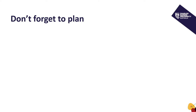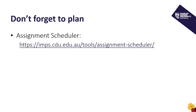Good writing starts with a good plan. The first tool is the assignment scheduler, which helps you to think about the stages of the writing process and recommends a timeline for your writing project. Note that you can find this scheduler at any time by searching in your favourite browser for the assignment scheduler.